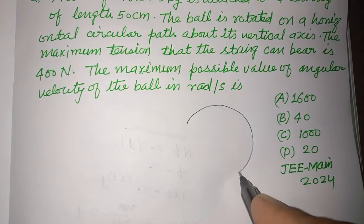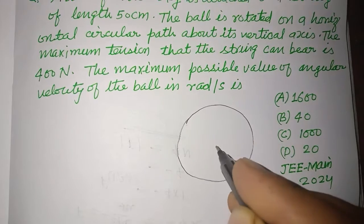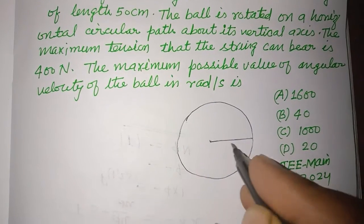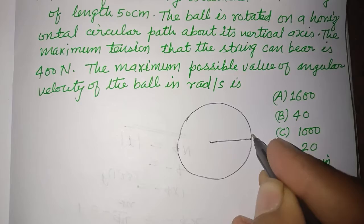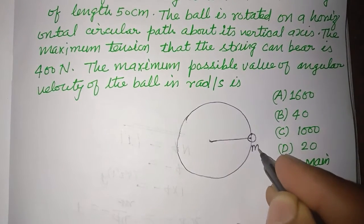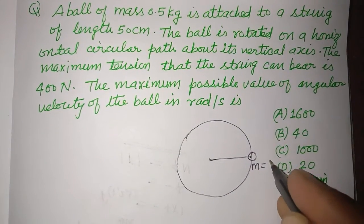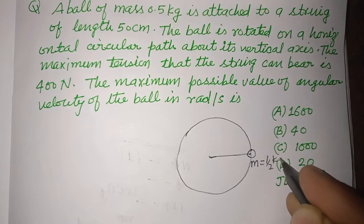A ball is rotating in a horizontal circular path. So this is the ball and its mass is given to us 0.5 kg, or we write it as 1 by 2 kg.